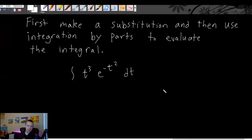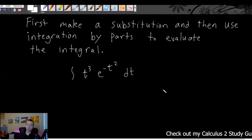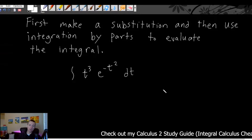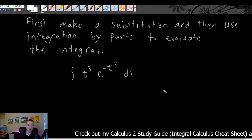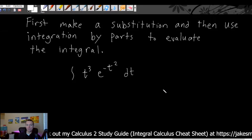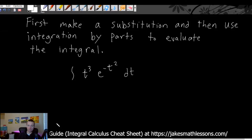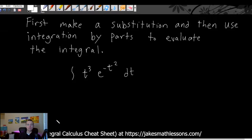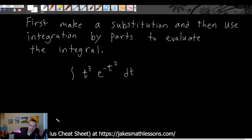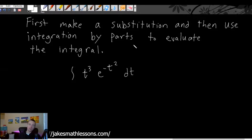The problem says: first make a substitution, then use integration by parts to evaluate the integral. We're going to have to use both methods here. Both formulas are on my calculus study guide, available for instant download. Fortunately, the problem tells us to first make a substitution and then use integration by parts, which at least eliminates the choice of which thing to do first.